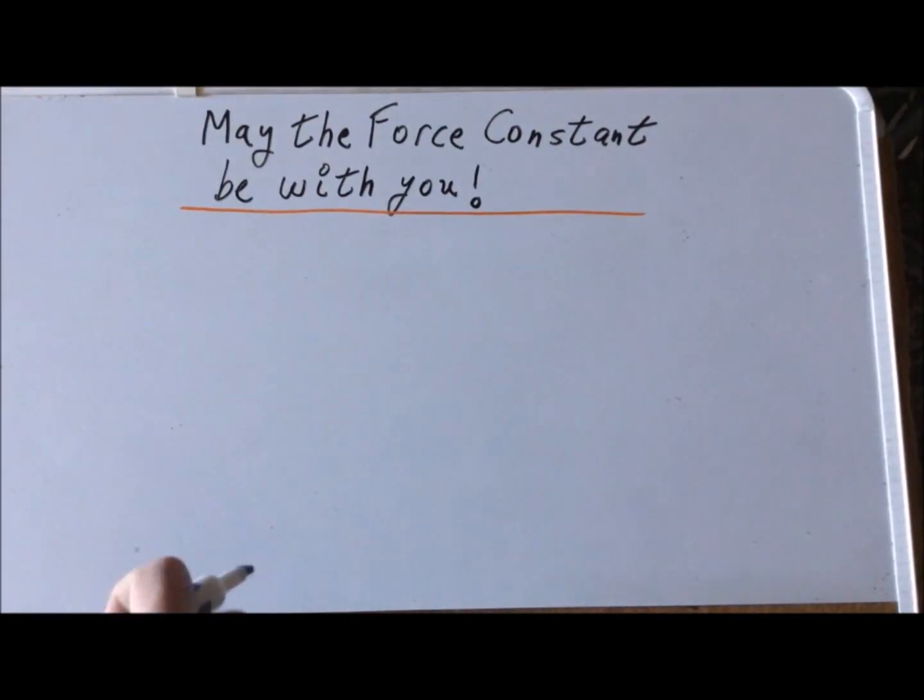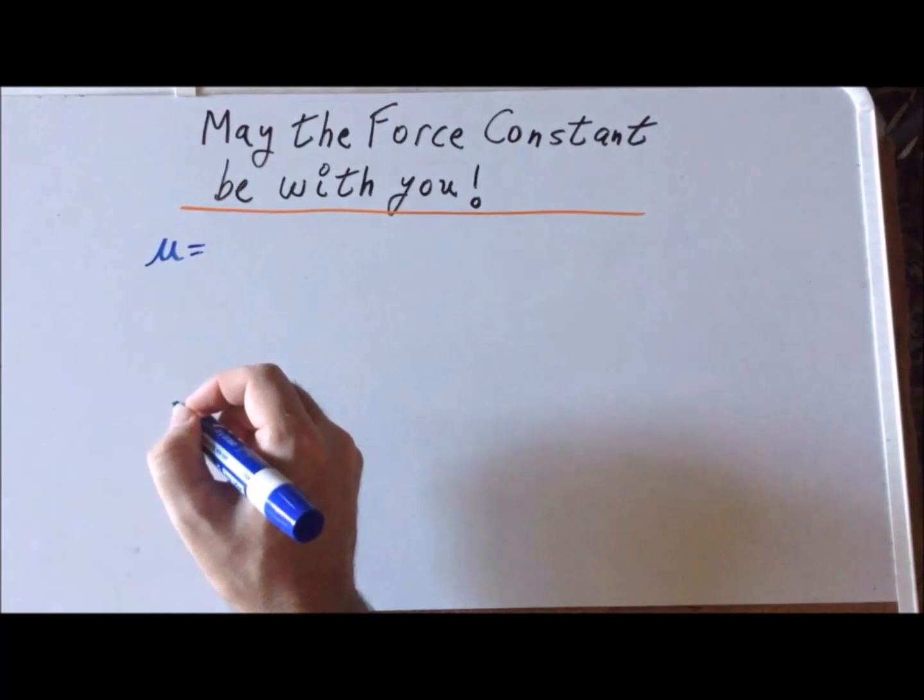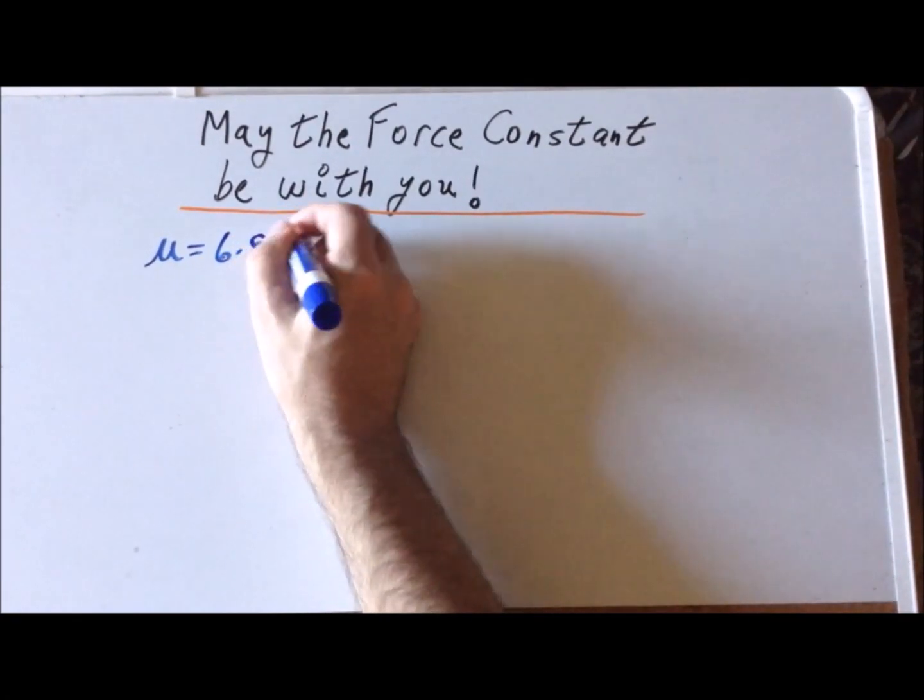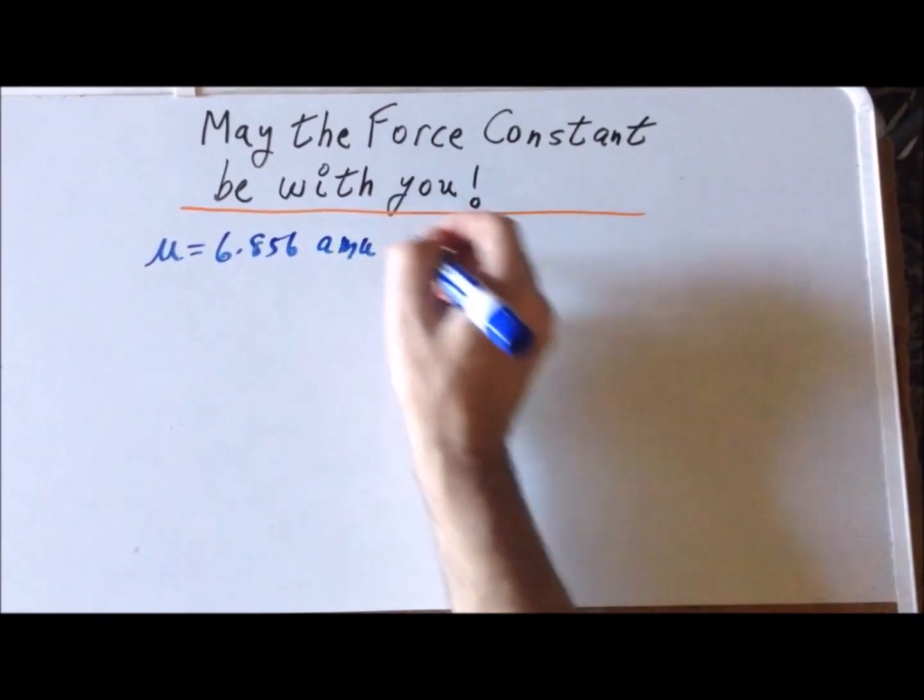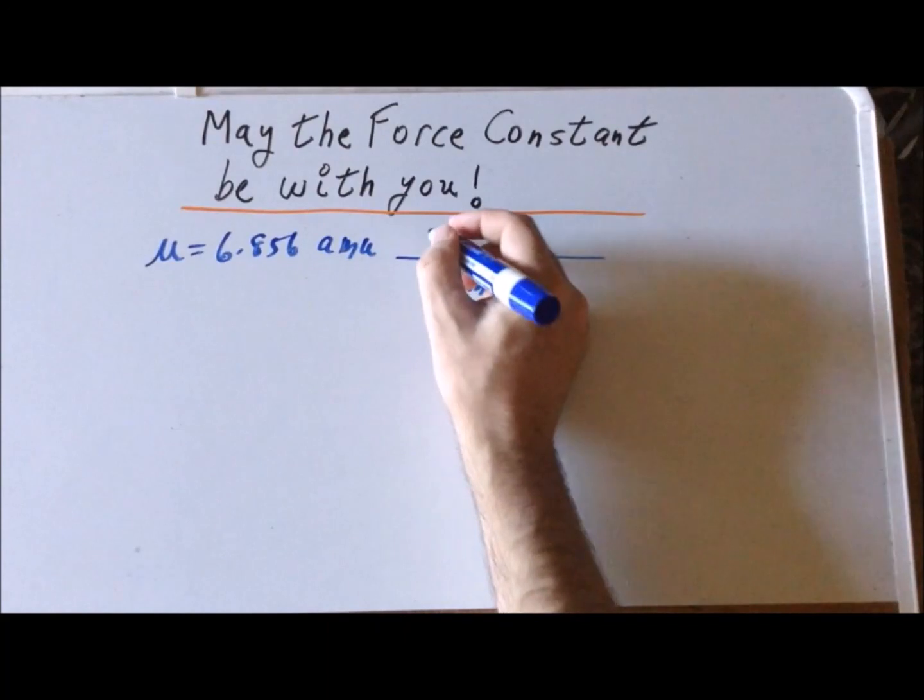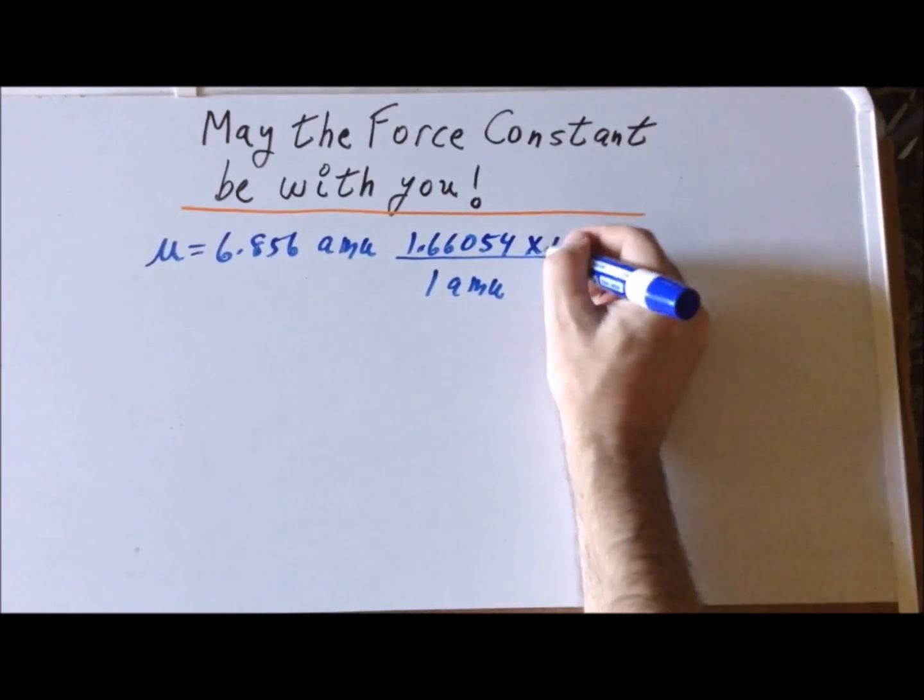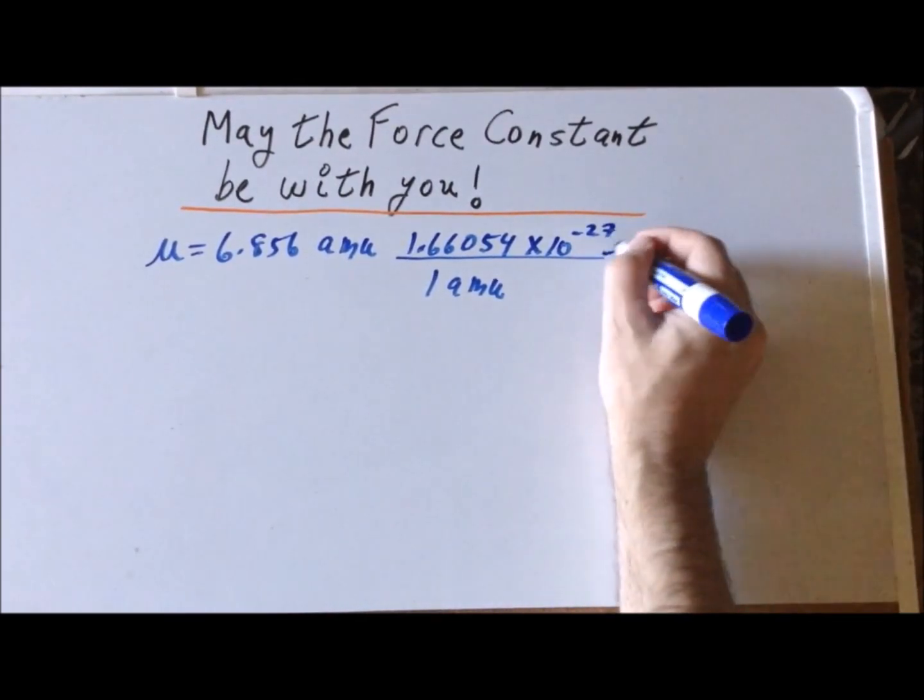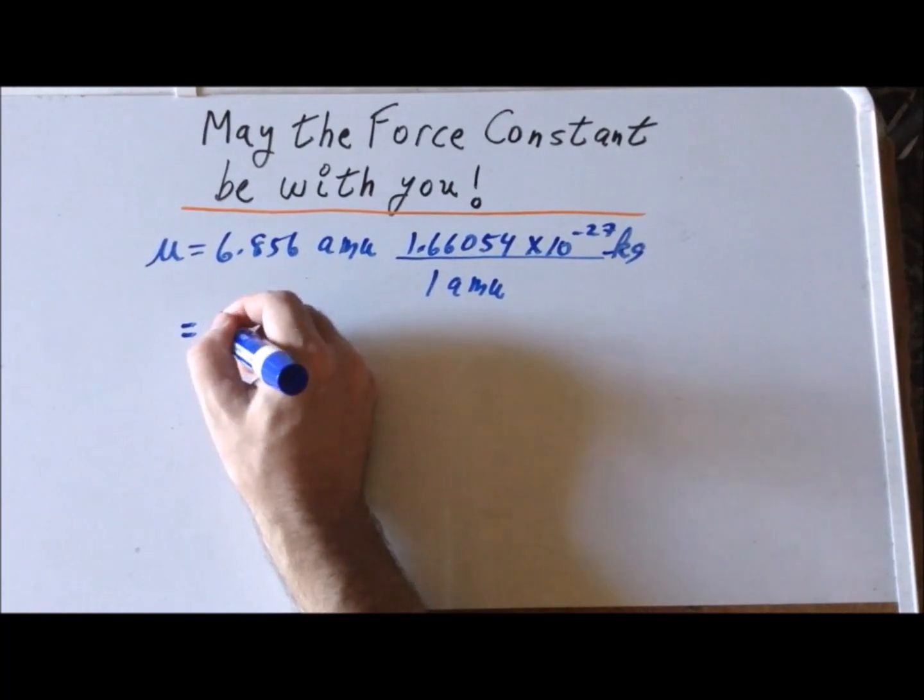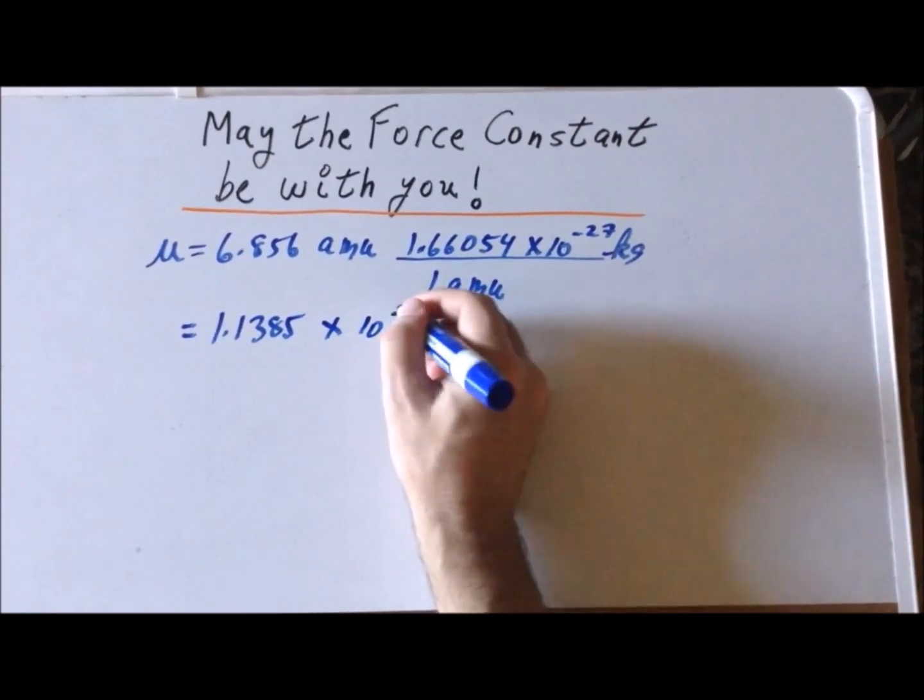We now want to convert from atomic mass units to kilograms. The reduced mass is 6.856 amu times 1.66054 × 10^-27 kg per amu, which gives us 1.1385 × 10^-26 kilograms.